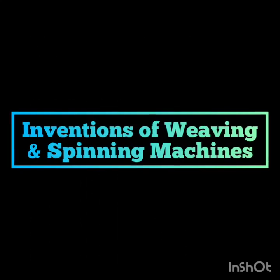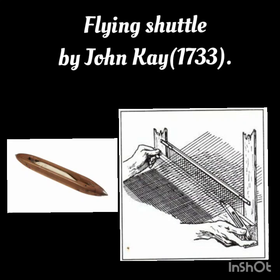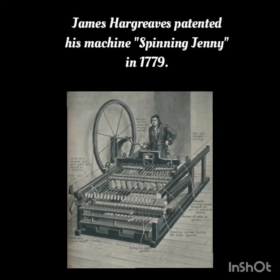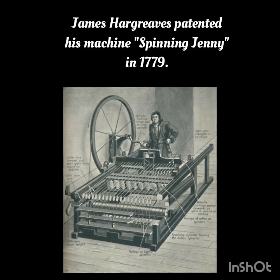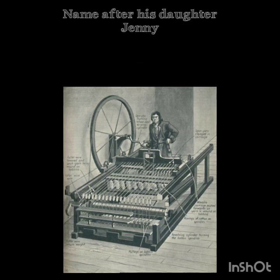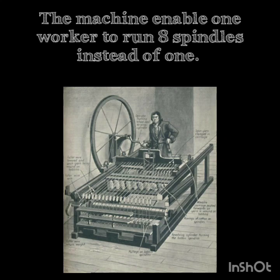Now let's see inventions of weaving and spinning machines and their inventors. One of the foremost inventions which made weaving quicker was the flying shuttle of John Kay (1704 to 1764), patented in 1733. As the flying shuttle sped up weaving, the demand for cotton yarn became alarmingly increased. Many British inventors worked hard to improve the spinning wheel. James Hargreaves (1720 to 1779), a weaver and carpenter himself, patented his spinning jenny in 1779. His machine was named after his daughter — the spinning jenny. It enabled one worker to run eight spindles instead of one.